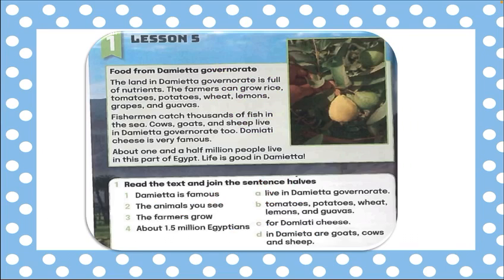Sentence number one: Damietta is famous — is it A, B, C, or D? Damietta is famous for Damietta cheese — yes, it's C. Remember, we have to use 'famous' with 'for.' Damietta is famous for Damietta cheese. We can also say Alexandria is famous for fish, or Alexandria is famous for the sea. Giza is famous for the pyramids. So sentence one matches with letter C.